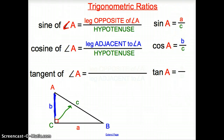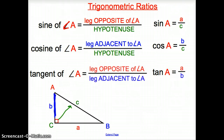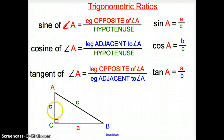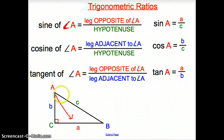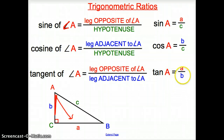And then finally, we have tangent of angle A, which is the leg opposite of A over the leg adjacent to angle A. The leg opposite of A is a, and the adjacent is B, so tangent of A equals A over B.